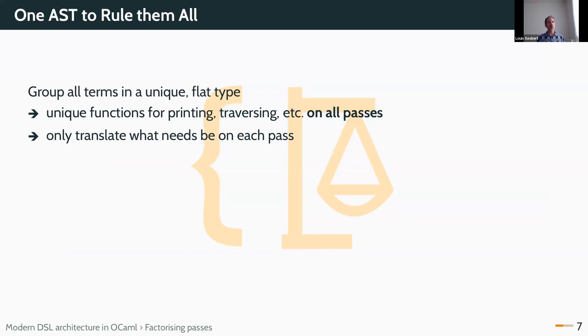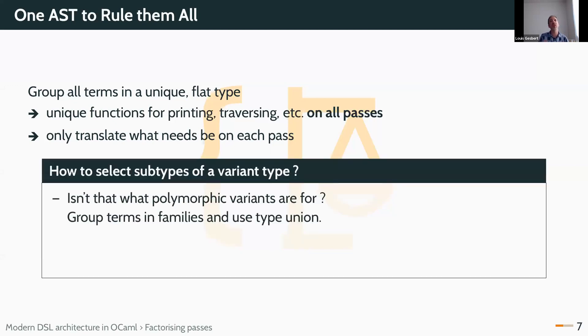One idea, the simplest possible, would be to group all the terms in a unique flat type. In this way, it's very easy to write a printer that will work on all your ASTs, because you just have one. Of course, we don't want to give up on typing the different classes. We need some more tooling to do that. We need basically subtyping to select some terms of your AST for each AST.